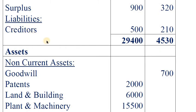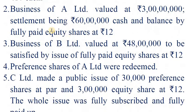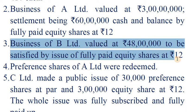Third entry — entry for purchase consideration. We are given the business of B. Ltd. valued at 48,00,000. This is the purchase consideration, to be satisfied by issue of fully paid equity shares. The general entry being: C. Ltd. account Dr. to realization account, 48,00,000.